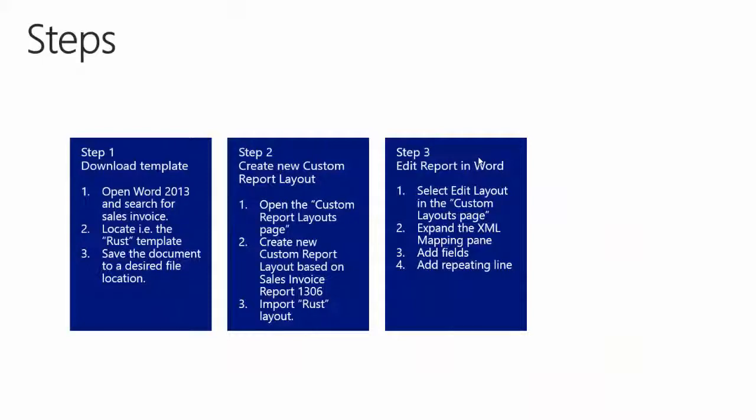Step 3: Edit the template in Word. We will select Edit Layout in the custom report layout page and insert content controls — for example the company address and line items. We will expand the XML mapping pane found in the Developer tab. To add a field, right-click and select Insert Content Control, then choose Plain Text. For the line table, right-click, select Insert Content Control, and choose Repeating.